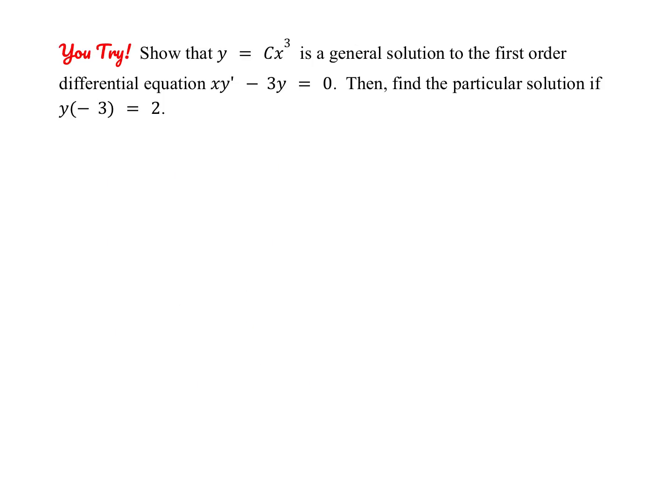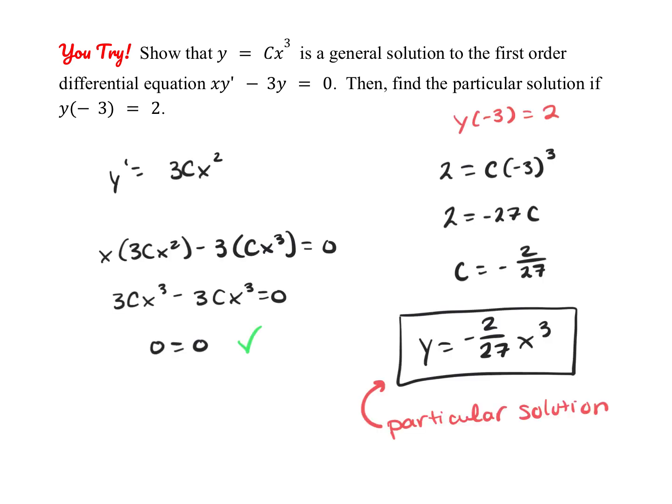Here's one for you to try on your own — go ahead and pause the video. You need to find the first derivative so you can substitute y prime and y to verify it's a solution, which it is. Then use the initial condition to solve for c and find the particular solution.